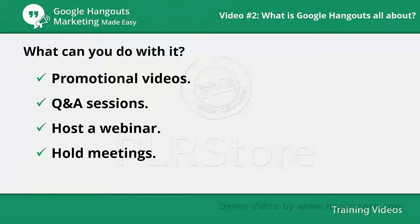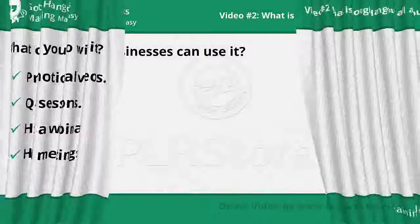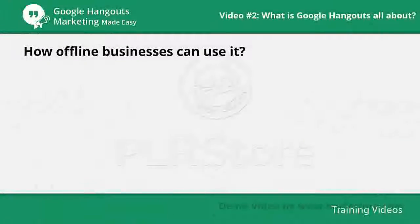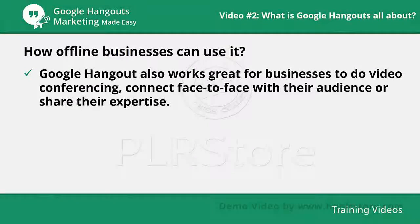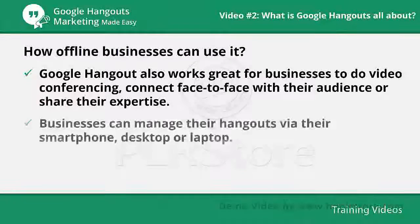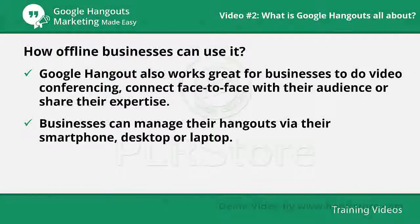Meetings can be done one-on-one or one-on-many. You can share your screen and reviews of a particular meeting with other users. Google Hangout also works great for businesses to do video conferencing, connect face-to-face with their audience, or share their expertise. Businesses can manage their hangouts via their smartphone, desktop, or laptop.